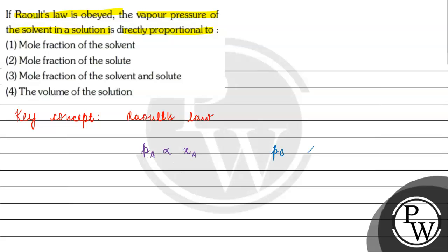Agar baat kertay hain pb ki — the partial pressure of B is basically directly proportional to the mole fraction of B. Agar do components A and B hain, toh hummare paas partial vapor pressure of A will be directly proportional to the mole fraction of A.